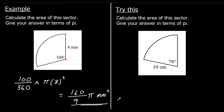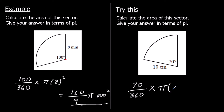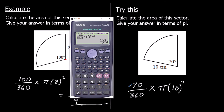One for you to try — calculate the area of this sector. We're going to write the fraction of the circle we've got: 70 three-hundred-and-sixtieths. That's the fraction of the circle. So we want that fraction of the area of the whole circle, which is pi times the radius squared. I'm going to type this into the calculator.